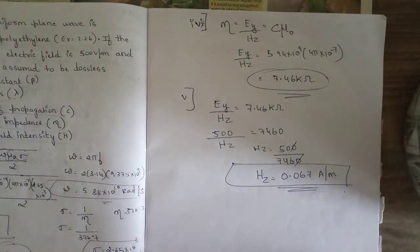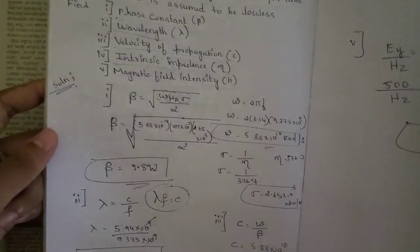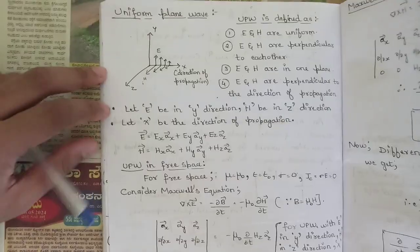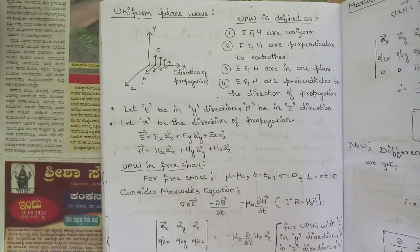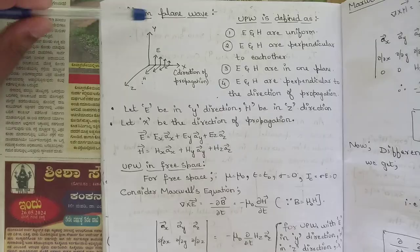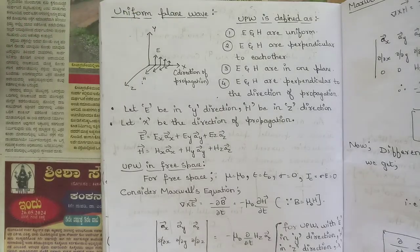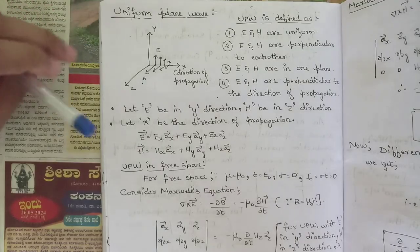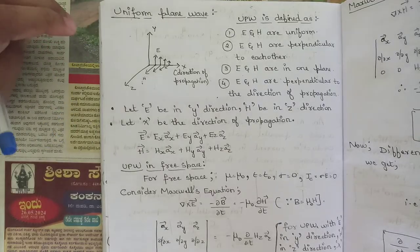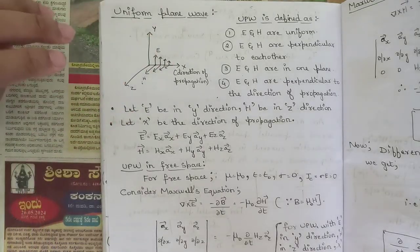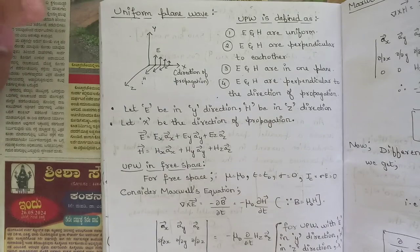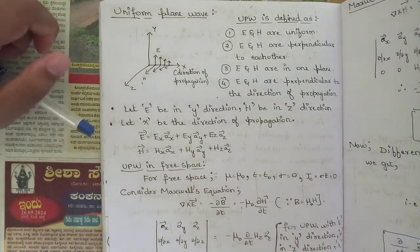That gives us the value of magnetic field intensity, completing all five sub-questions. Welcome to this new session. We are going to continue with Module 5 and discuss one more concept related to uniform plane waves — the movement of electric field intensity and magnetic field intensity uniformly distributed along a surface.